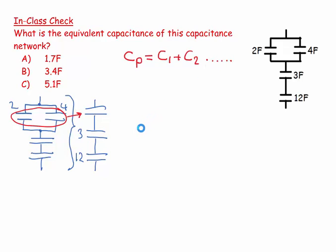how many there are. And so I can say that my C parallel is equal to, in this case, 2 plus 4, which equals 6 farads. I know the equation, but